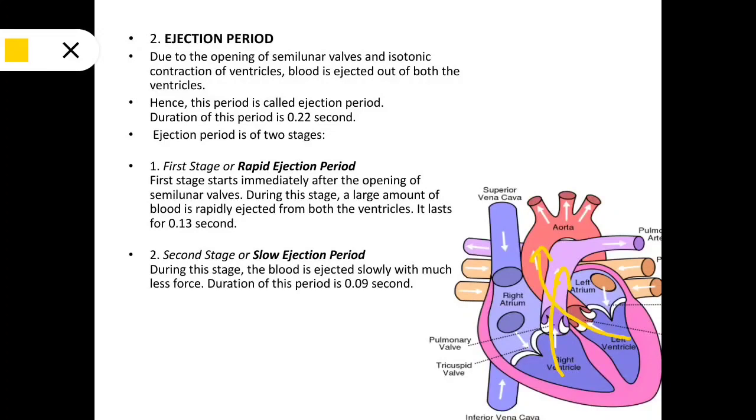Slow ejection period: During this stage, the blood is ejected slowly with much less force. Duration of this period is 0.09 seconds.